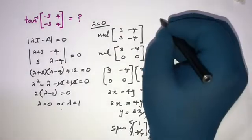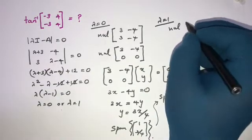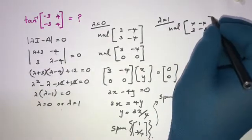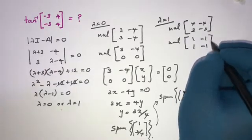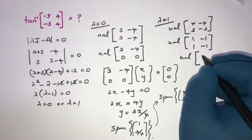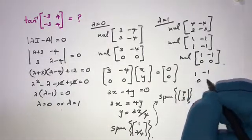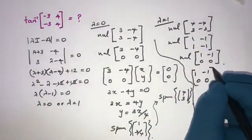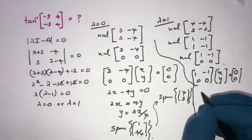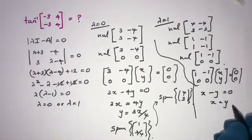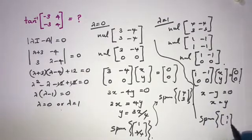For the next eigenvalue λ equals 1, we find the other eigenvector. The null space gives us the matrix [4, -4; 3, -3]. Row reducing, we get [1, -1; 0, 0], so x minus y equals 0, meaning x equals y. The eigenvector is the span of [1, 1].